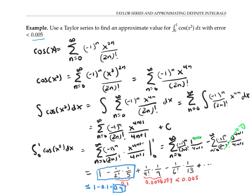Of course, I'll get an even more accurate answer if I also include the next term. In that case, I'll have 0.9046297.